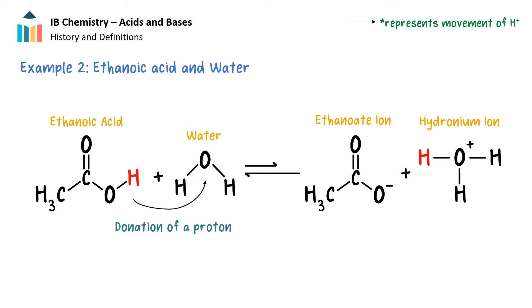In this next example, acetic acid, otherwise known as ethanoic acid, is donating a proton to water and is therefore considered the acid, while again, water is accepting the proton and is considered the base. It is important to note here that a Bronsted-Lowry acid must have a base to which it can donate its proton.